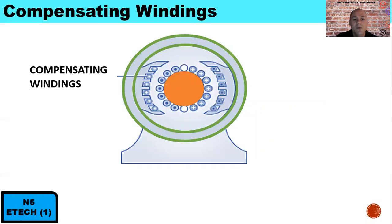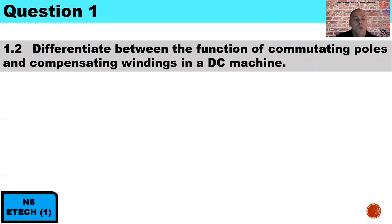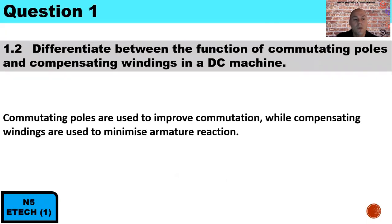Our compensating windings are slotted inside the pole shoes. Question 1.2: Differentiate between the function of commutating poles and compensating windings in a DC machine. Commutating poles are used to improve commutation, while compensating windings are used to minimize armature reaction.